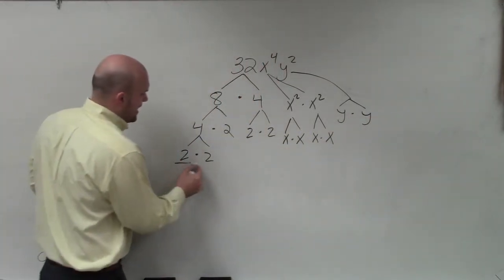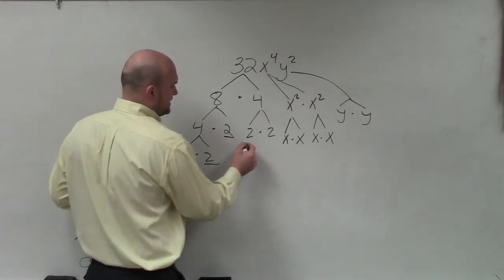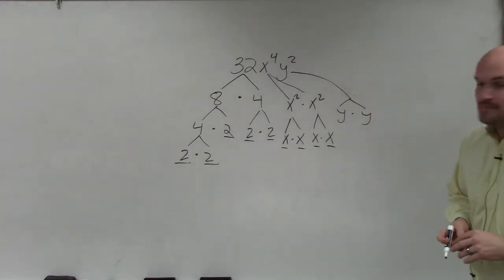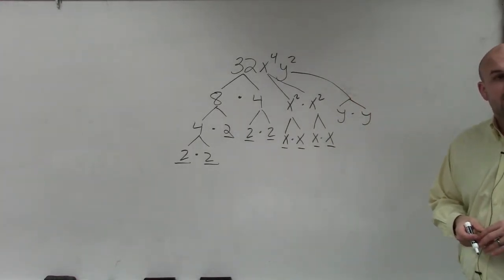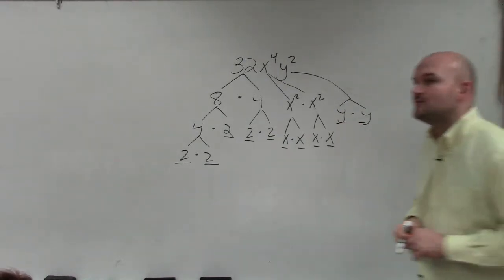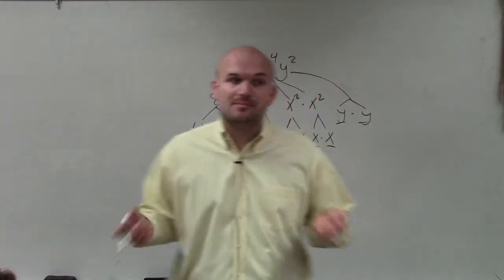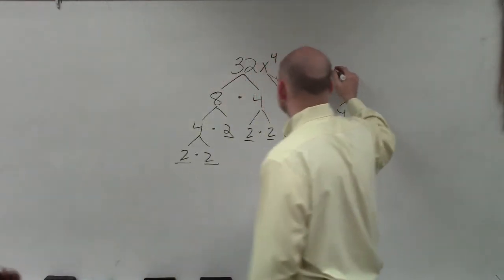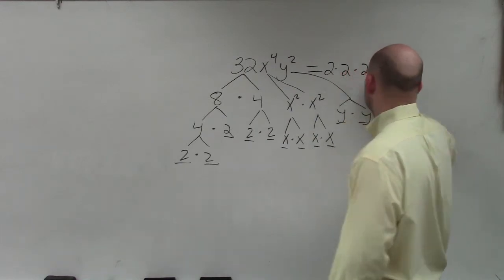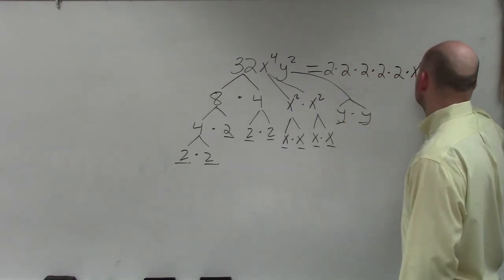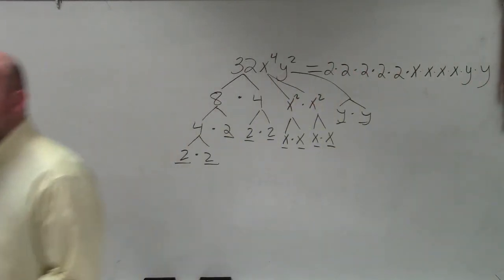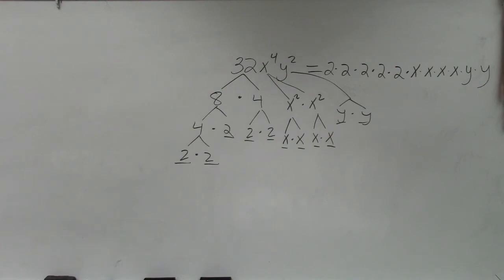So now you guys can see that I have all of these prime numbers. Now I simply just rewrite the product of all the prime numbers, and this is going to be your prime factorization. So this is equal to 2 times 2 times 2 times 2 times 2 times x times x times x times x times y times y. And that is the prime factorization of that term.